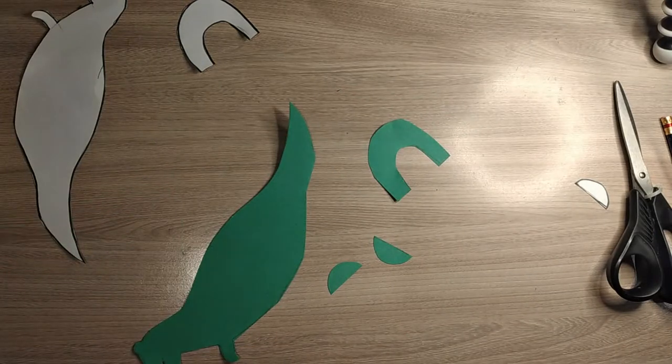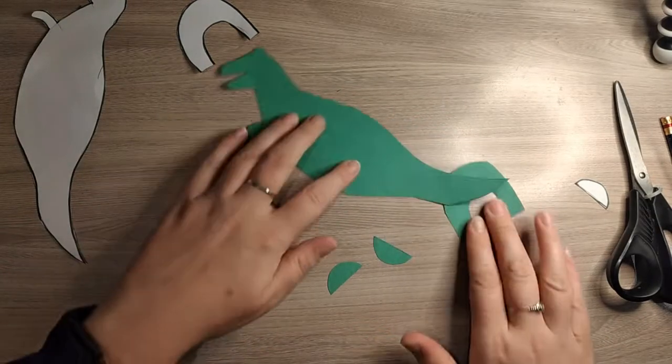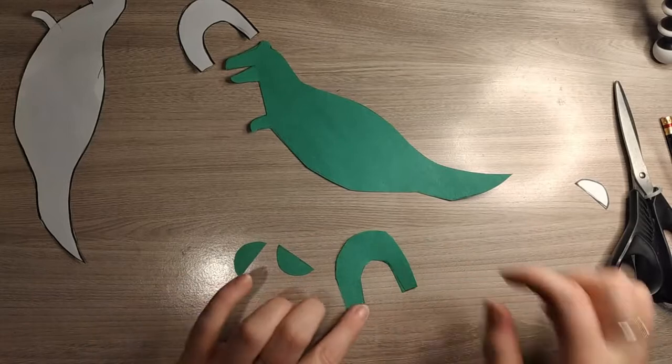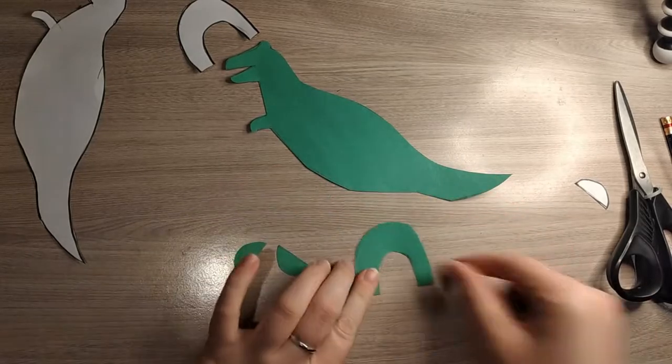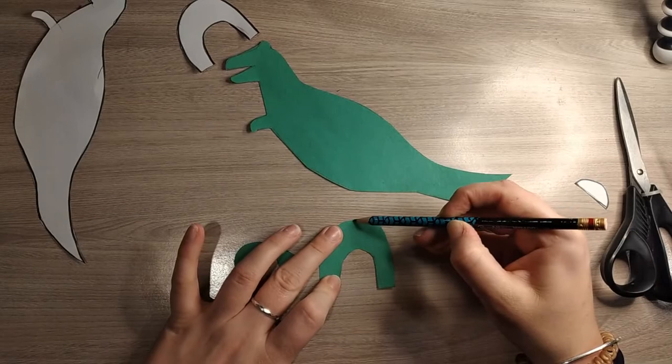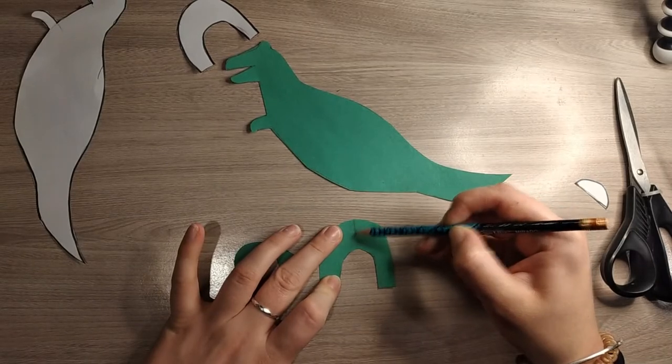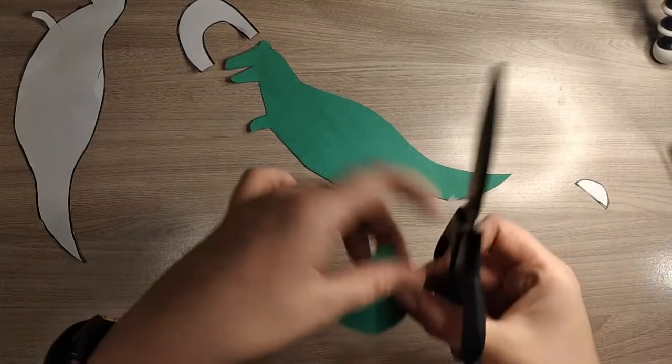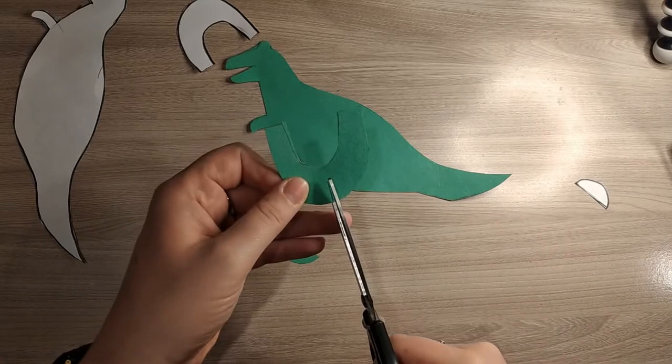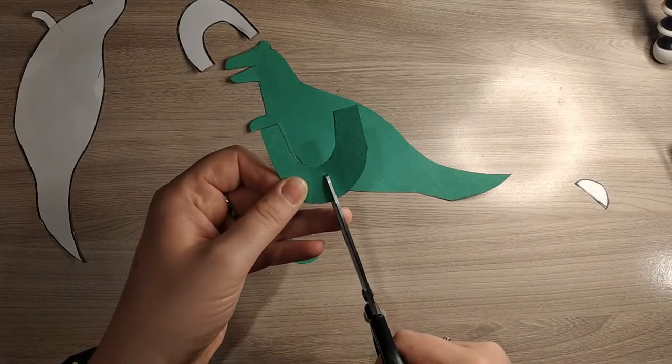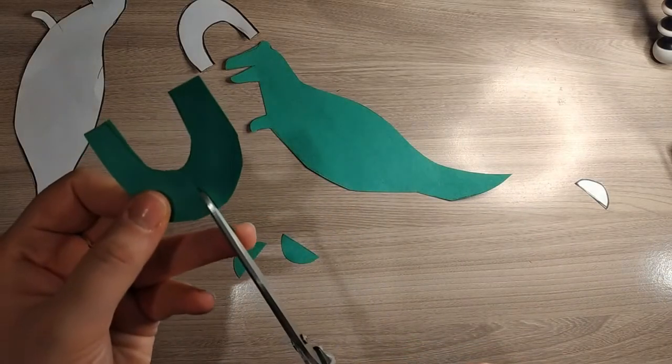Okay, so I've cut out my dinosaur. The next thing I need to do is in the legs - and this is for all of the dinosaurs - you need to make sure that you cut out a line in the middle. Not all the way, can you see, just a little snip.